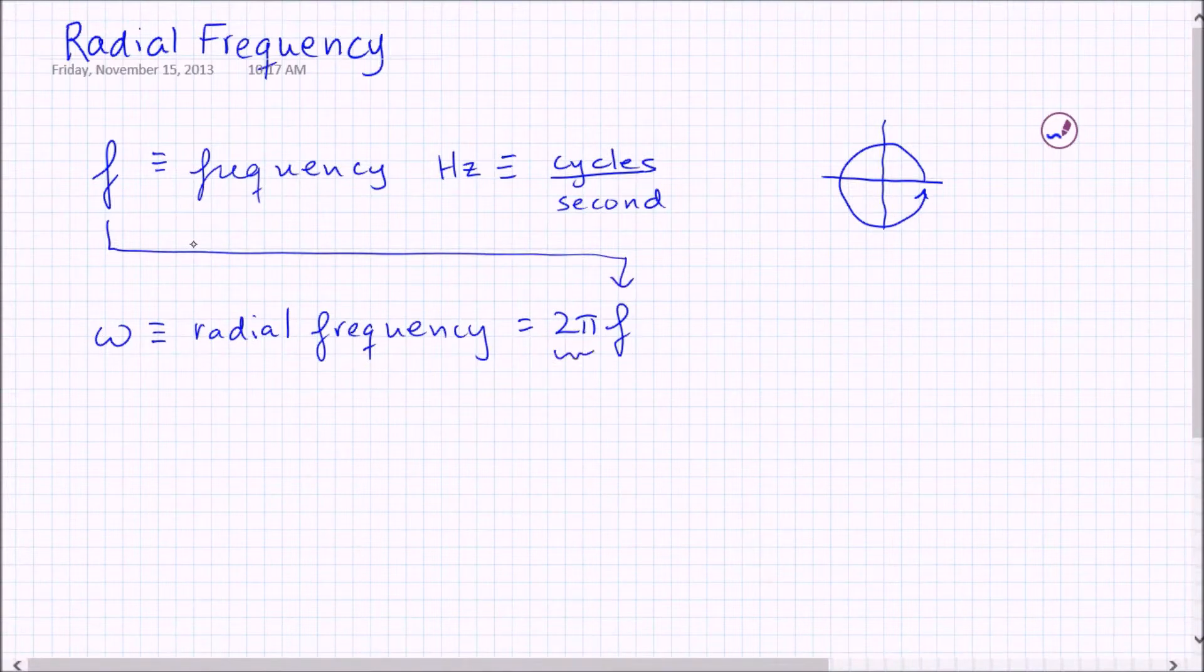Now what's this two pi all about? Well, it comes from this idea of a cycle. A cycle has two pi radians, right?